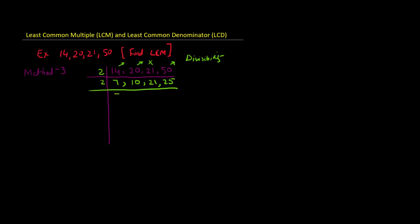So on the next row: 14÷2=7, 20÷2=10 becomes 10÷2=5, keeping 21 and 25 unchanged. Now none of these numbers is divisible by 2 — no even number or 0 at the end — so we move on to dividing by 3.